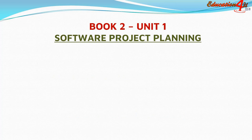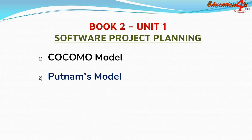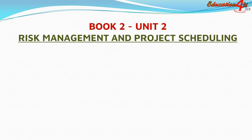Book 2, Unit 1 — Software Project Planning. In this unit, there are two models which are mostly estimation models: the Cocomo model and Putnam's model. Go through what these models are and have an overview of these topics.